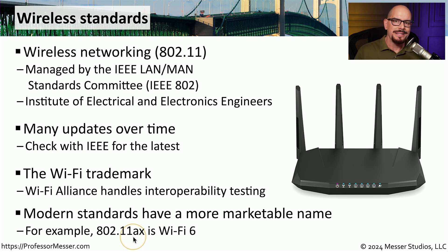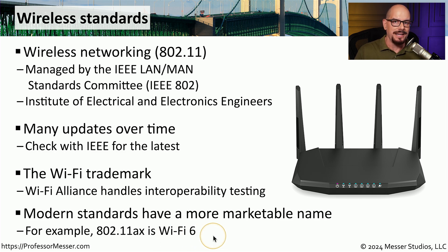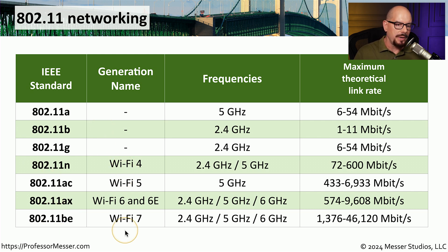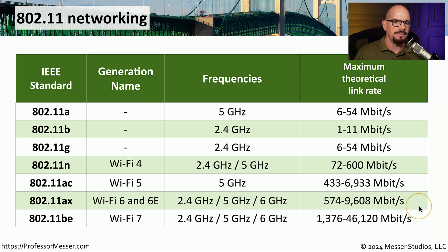We've recently added additional names to these standards to make them easier to understand for everyone connecting to these wireless networks. For example, if you're using the sixth generation of Wi-Fi networks, then you're connecting to an 802.11ax network, which we also refer to as Wi-Fi 6. This chart shows a list of all of the major Wi-Fi standards listed by their 802.11 name, along with the new generational name, the frequencies they use, and the maximum theoretical link rate for each standard.